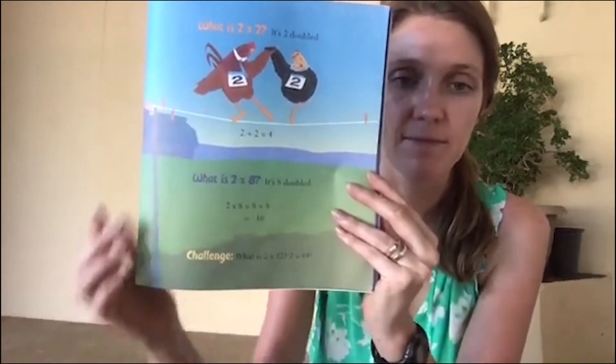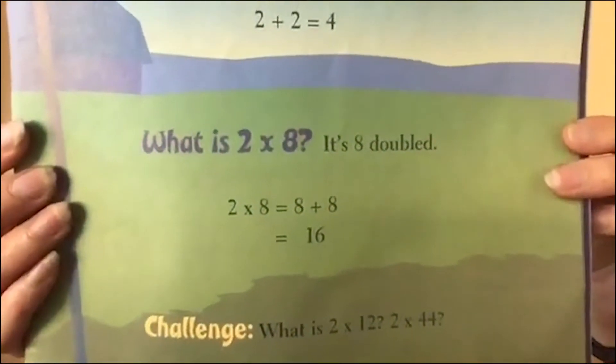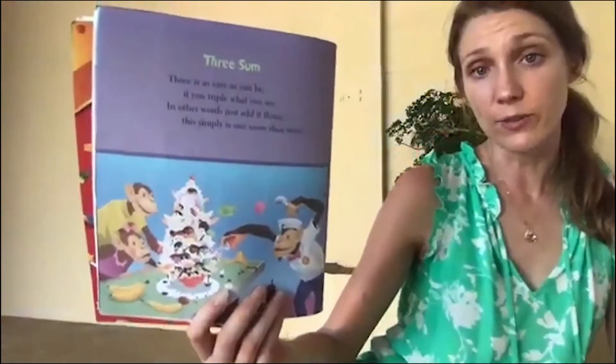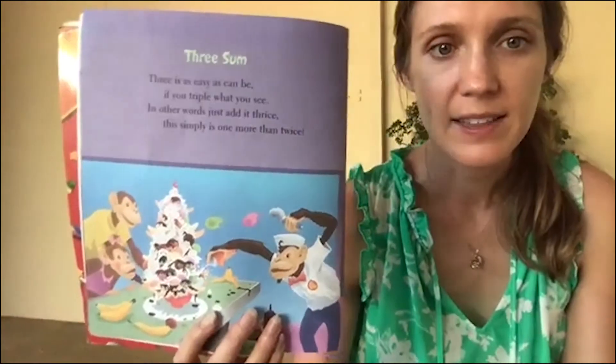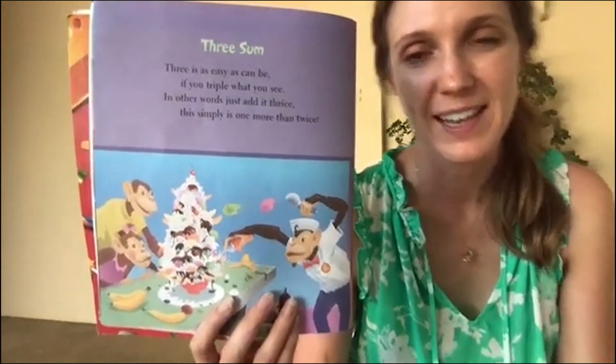Here are some challenges for you to try — pause the video and work them out in your notebook. For threes: 'Three is easy as can be, if you triple what you see. In other words, just add it thrice — this simply is one more than twice.' So instead of doing it two times, you do it three times.